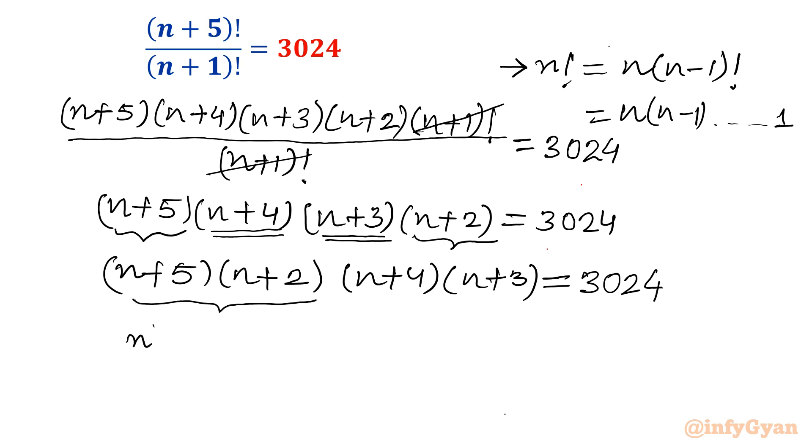That product will come out n² + 5n + 2n, which is 7n + 10. And the second bracket, if you take the product, then it will come out n² + 4n + 3n, which is 7n + 12 equals 3024. Both parentheses, you can see, have n² + 7n common.